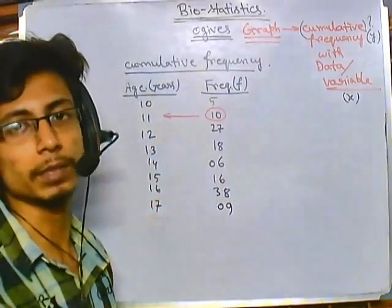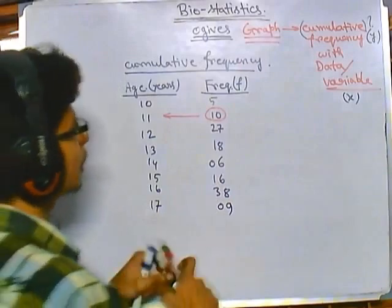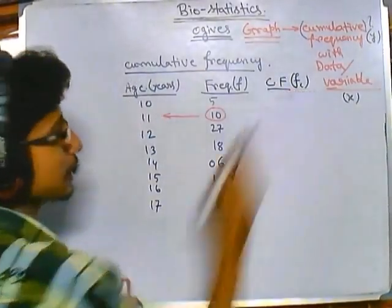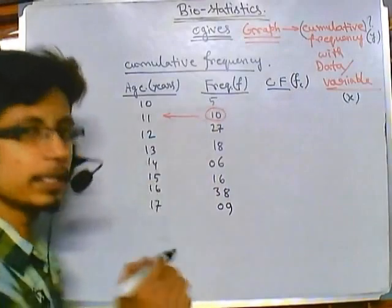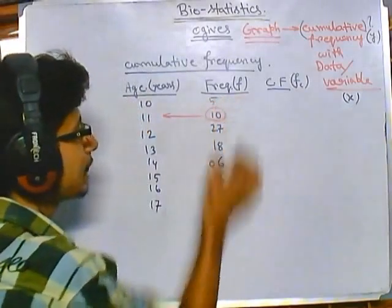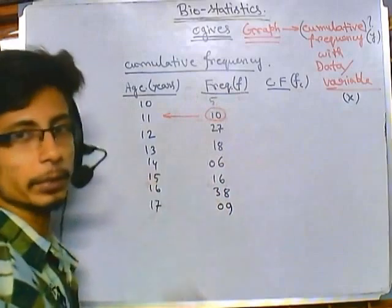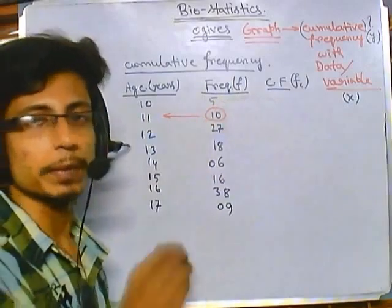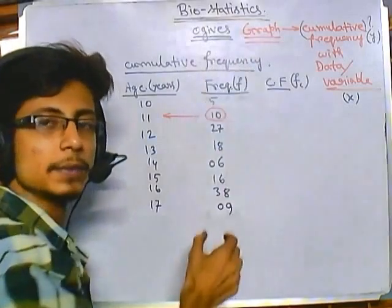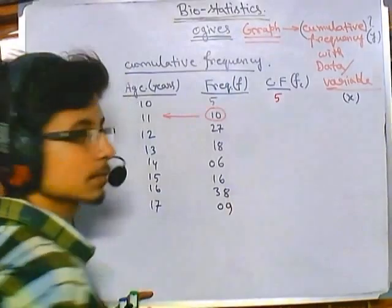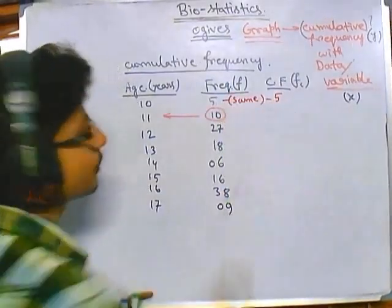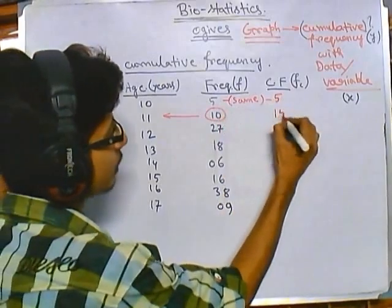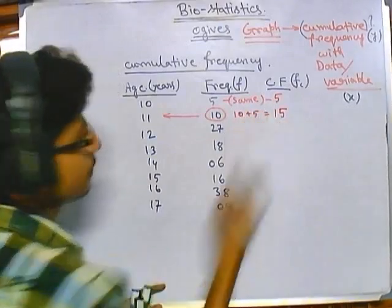Now let's compute the cumulative frequency, denoted f sub c. The cumulative frequency is formed by simply adding the absolute frequencies. The first cumulative frequency is the same as the first absolute frequency, which is 5, because there is nothing above it in the table. Then we add the next frequency: 10 plus 5 gives us 15.